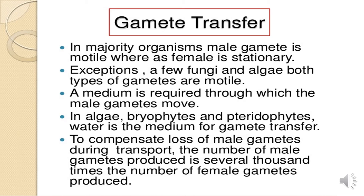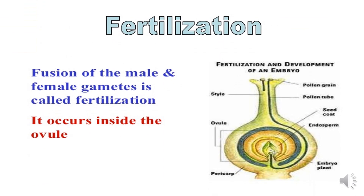In the majority of organisms, the male gamete is motile whereas the female is stationary. An exception is found in a few fungi and algae, where both types of gametes are motile. A medium is required through which the male gametes move. In algae, bryophytes, and pteridophytes, water is the medium for gamete transfer. To compensate for the loss of male gametes during transport, the number of male gametes produced is several thousand times the number of female gametes produced.